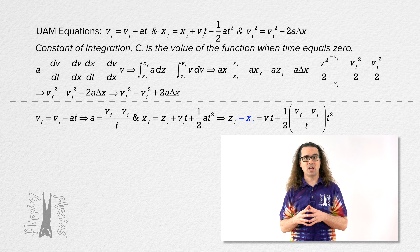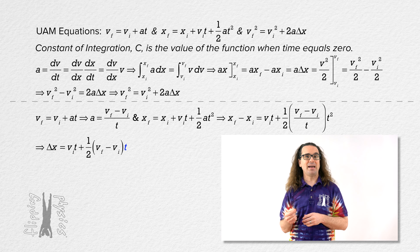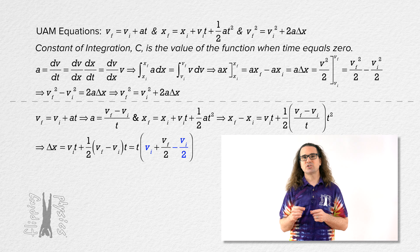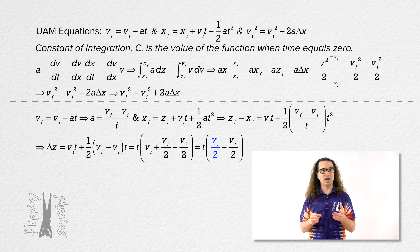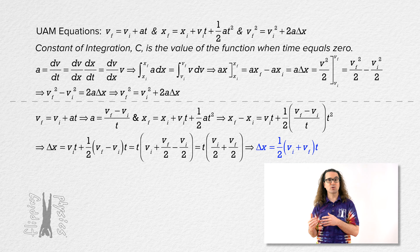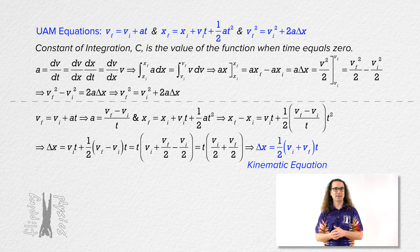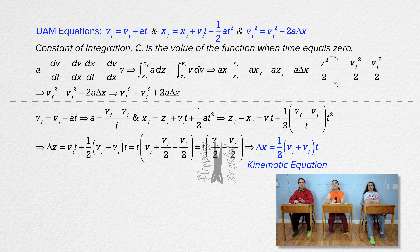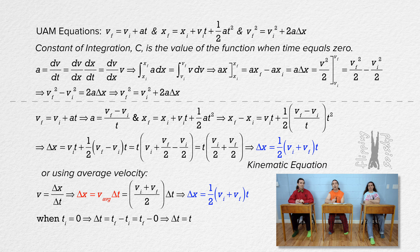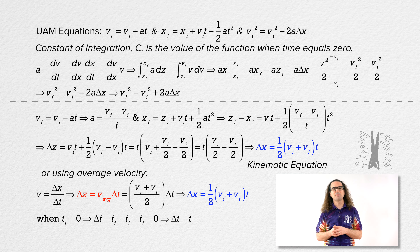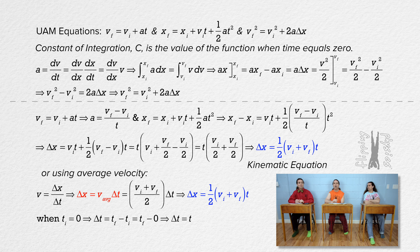Time squared over time reduces to just time, and we can factor out time. Velocity initial minus velocity initial over 2 equals positive velocity initial over 2. Factoring out one half gives us the fourth and, sadly, often ignored kinematic equation: displacement equals one half times the quantity velocity initial plus velocity final, all times time. Mr. P, doesn't that just equal the average velocity times time, which we know equals displacement? Why, yes, it does equal average velocity times time. I thought it would be more fun to derive the equation this way.